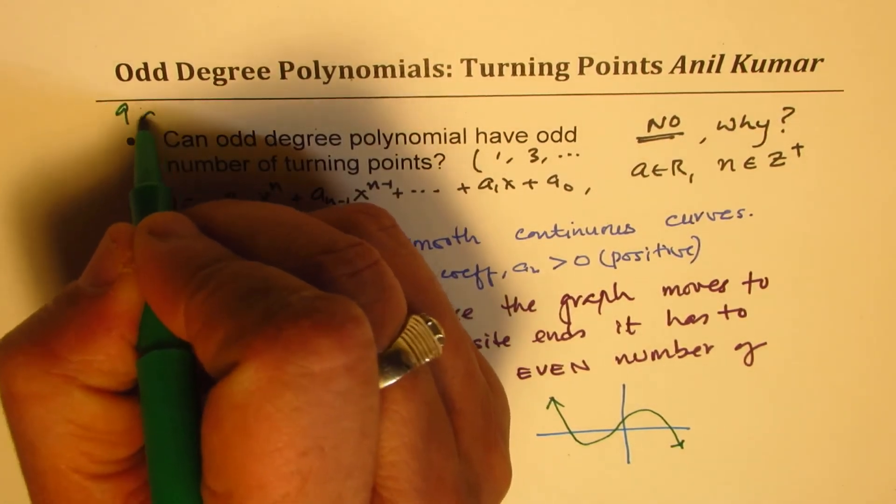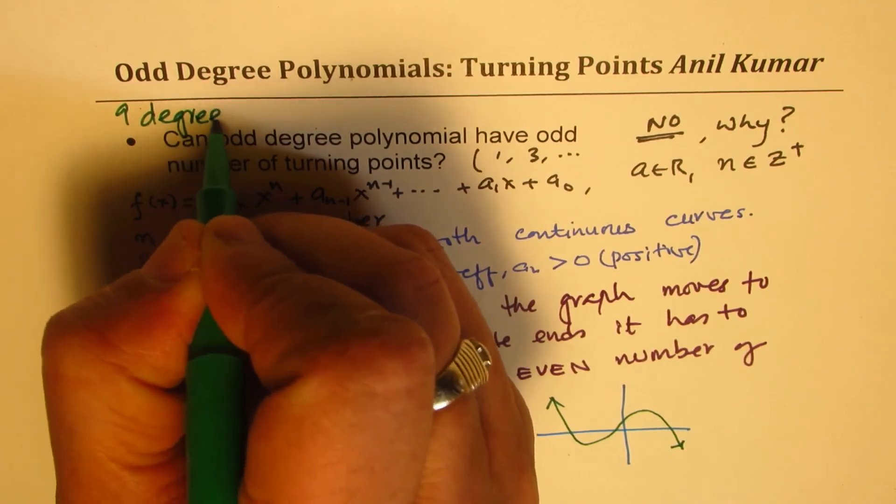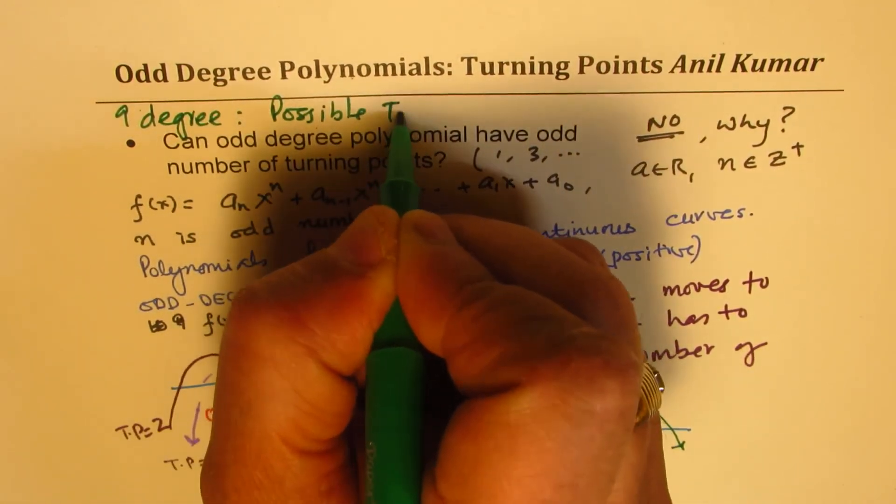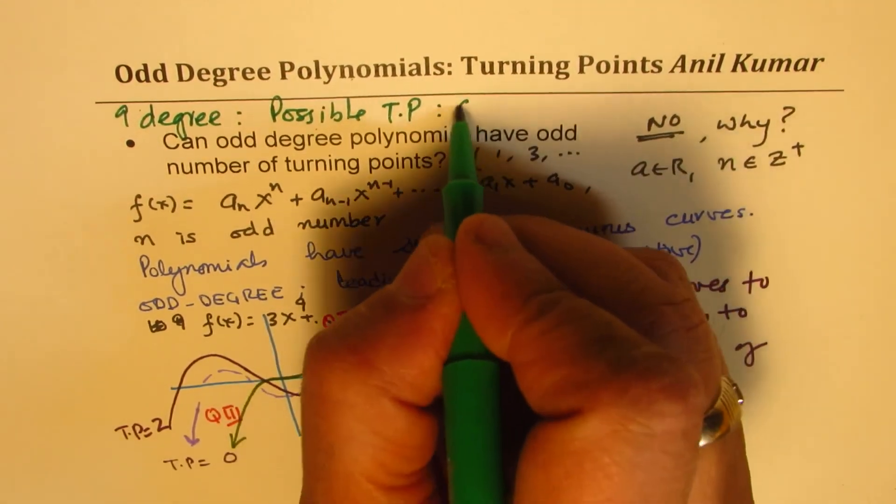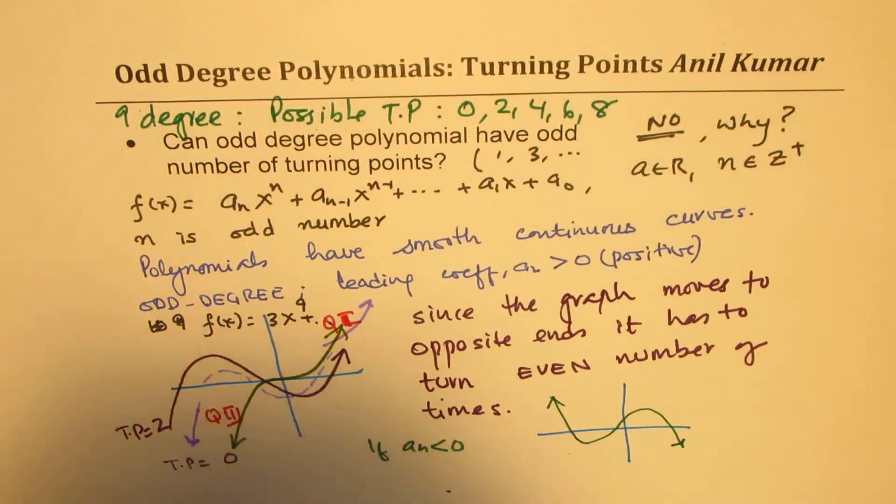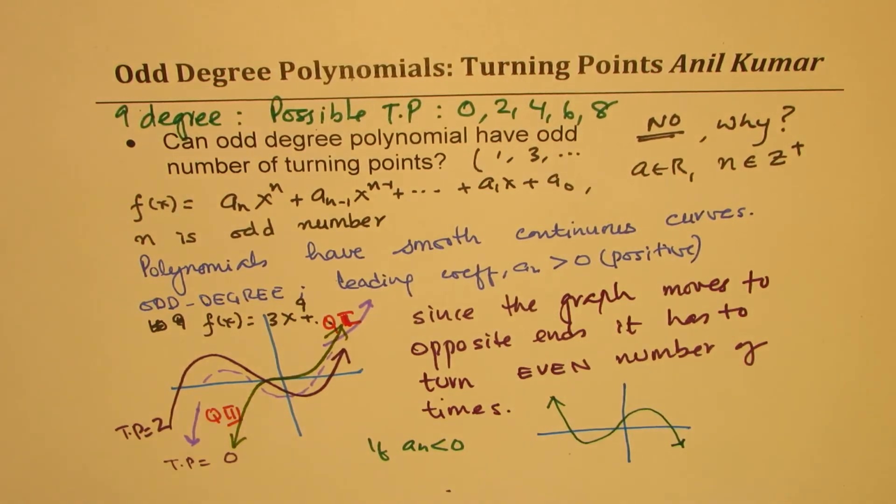So if I have a 9 degree polynomial, then possible turning points could be 0, 2, 4, 6, and 8, but it cannot have 3, 5, or 7 as its turning points. I hope that makes sense.